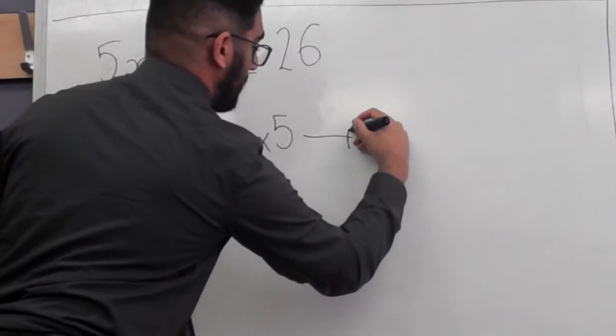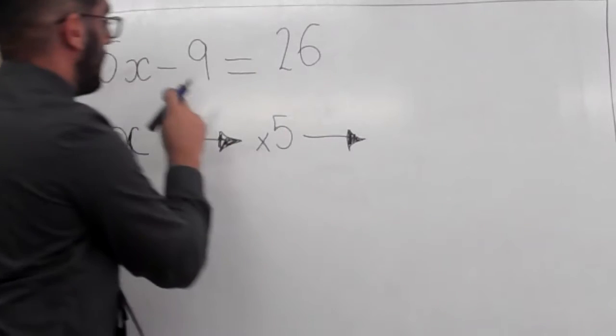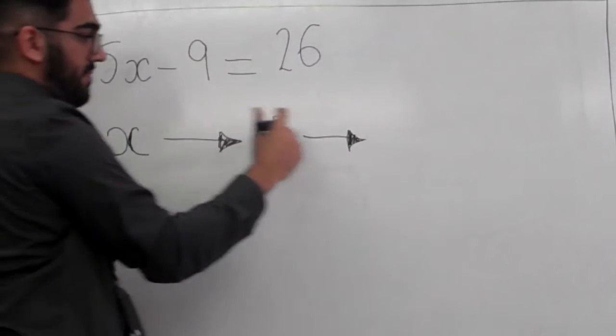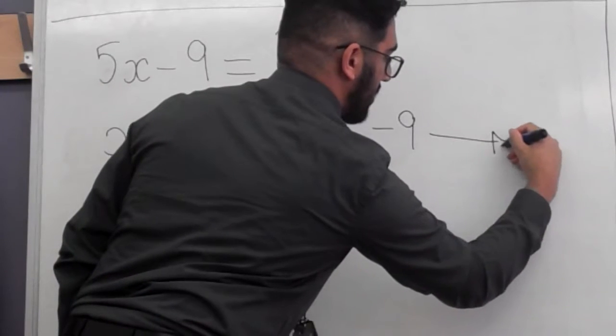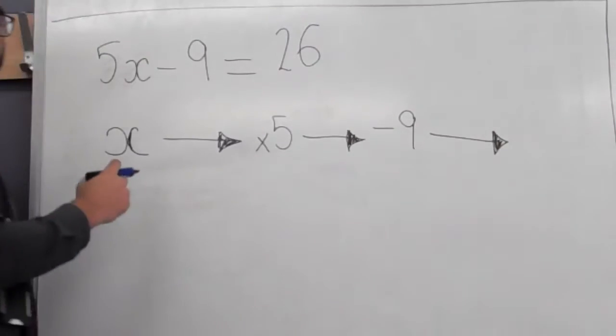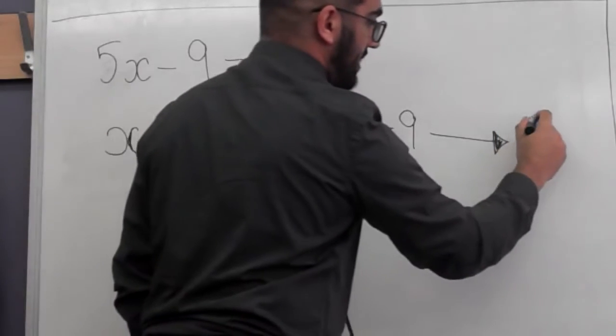After that, the next thing happening, according to this equation, is we're taking away 9. And at the end of that, again, referring back to the equation, we end up with an answer of 26.